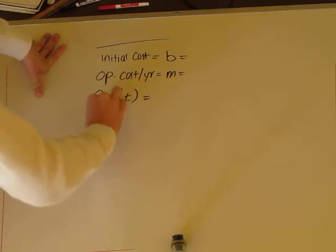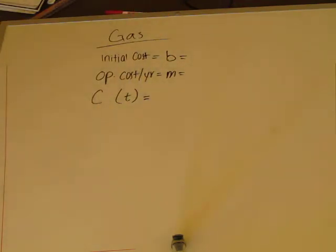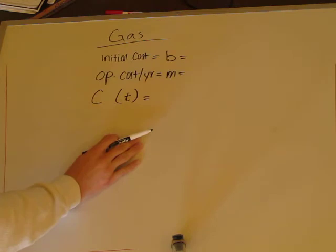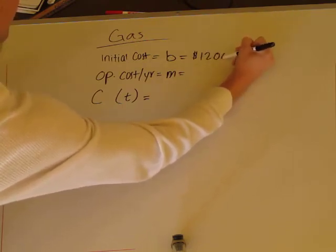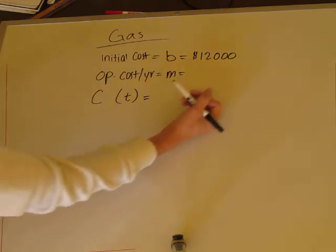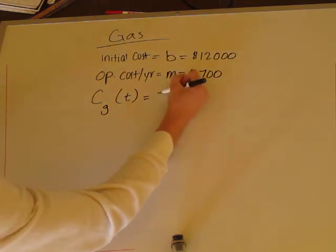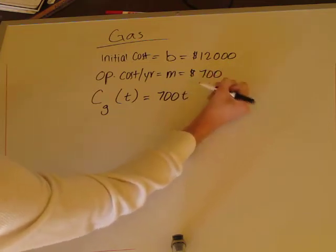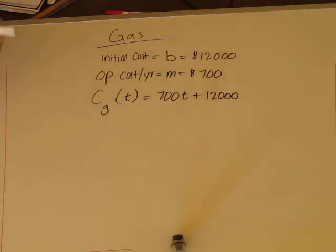Now let's move on to the gas system. You can pause the video and fill it in yourself, then check your answers against mine. For gas, the initial cost b is $12,000 and the operation cost per year is $700. So our formula for gas is Cg(t) = 700t + 12,000. Get that in your notes.